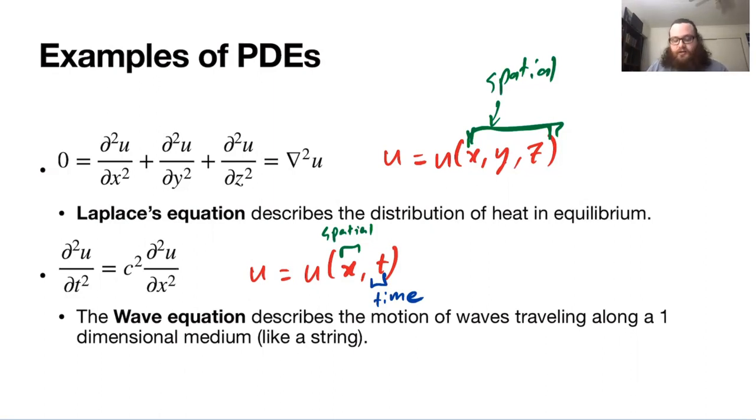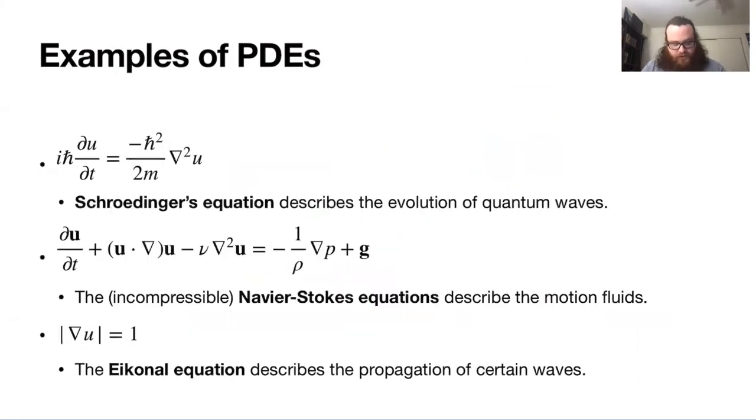But these aren't the only kinds of PDEs that can arise. Some others that may show up in various classes or things that you may be interested in include Schrödinger's equation. It's similar to the heat equation in that you have one time derivative and two spatial derivatives. But it's unique in that it incorporates this complex number i, square root of minus one. But as before, u in this case is going to be a function of space and time. I write this vector here because we have this ∇² operator.